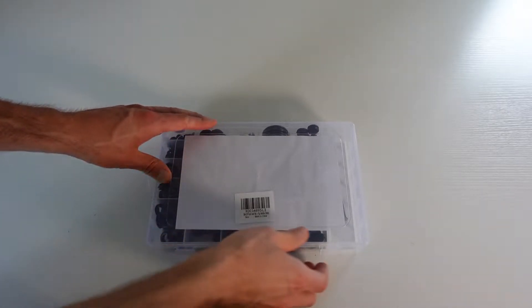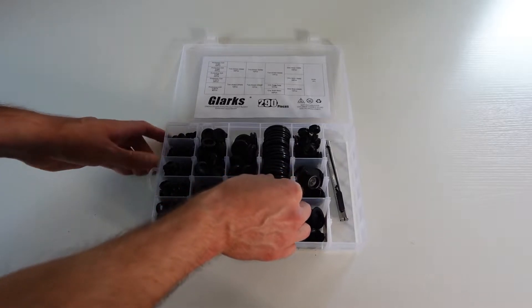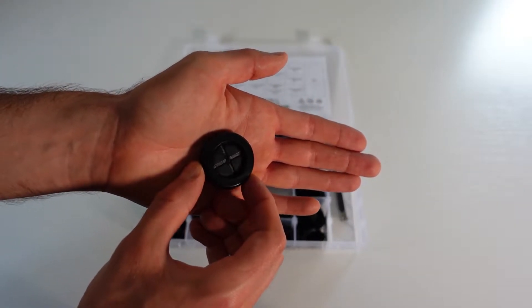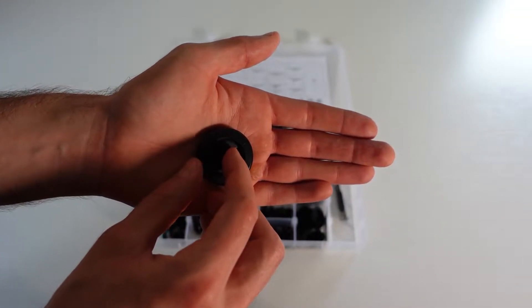So let's go ahead and take a look at what these grommets look like. They're all assorted into different sizes and different functions. The largest one here, you can actually see that there are slots where you can take an exacto knife and cut along those lines, which will allow you to feed wiring right through the grommet.